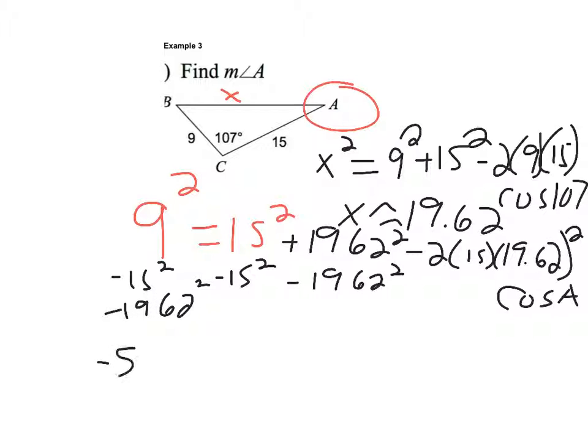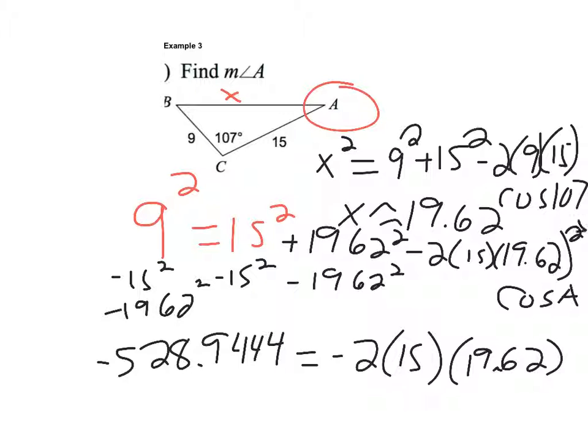So I have negative 528 and then I have 0.94444, I'm going to take at least four decimal places, equals negative 2 times 15 times 19.62. I didn't mean to square that. And then cosine A.